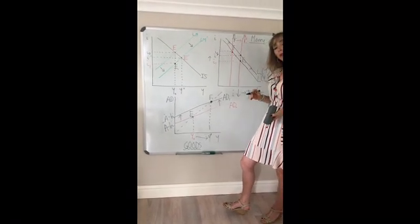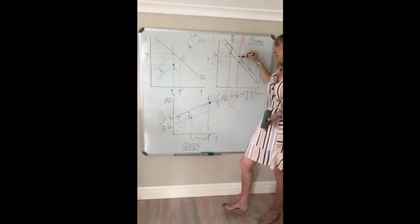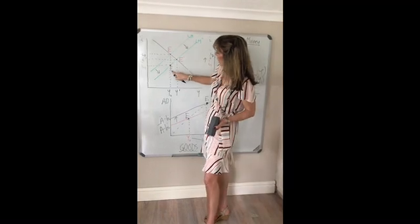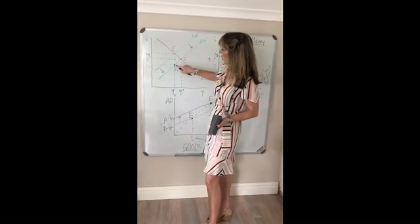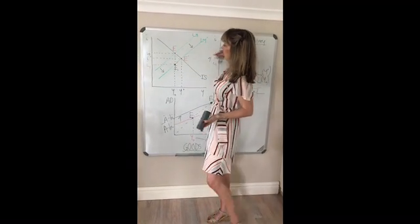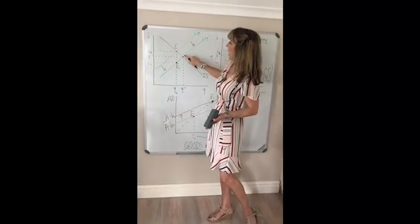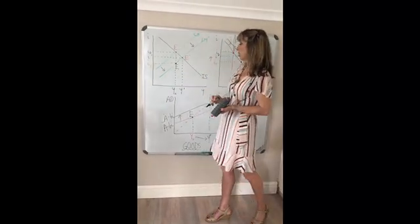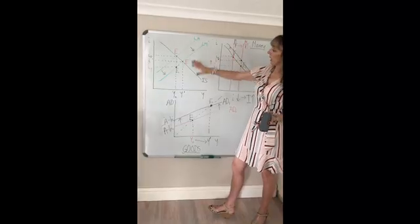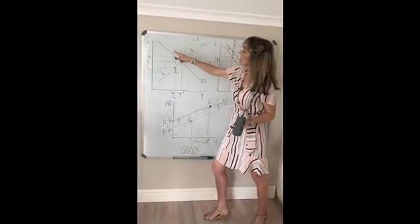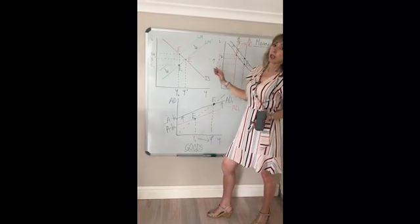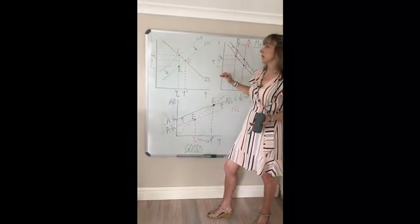Money demand increases, brings about an increase in the interest rate as we saw previously. So we're moving now from E1 to E dash. As income rises, the interest rate rises until we get to our final equilibrium E dash. So to recap, to understand this process of moving from our initial equilibrium to our final, we need to understand the transmission mechanism.